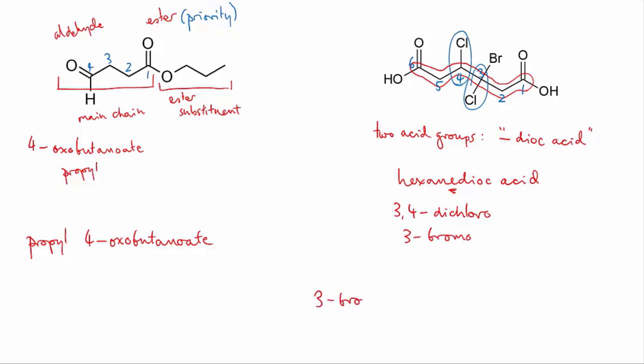Putting this all together with the bromo and chloro in alphabetical order gives us 3-bromo-3,4-dichlorohexanedioic acid.